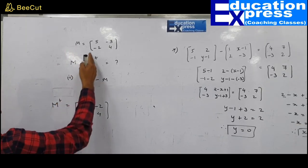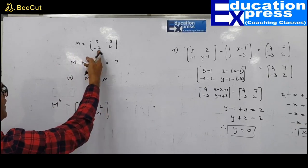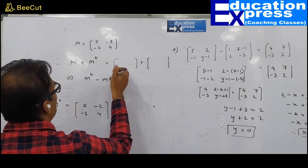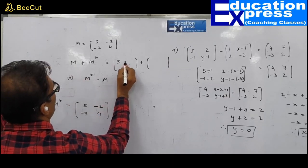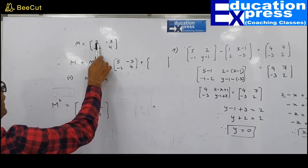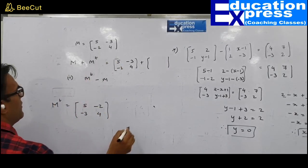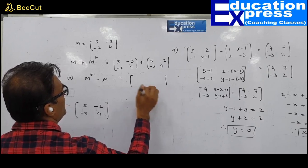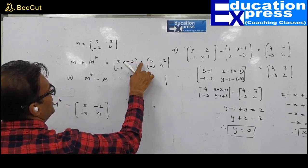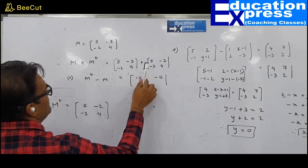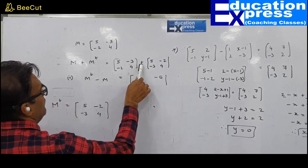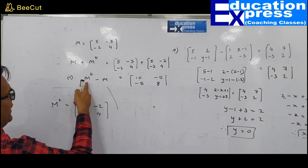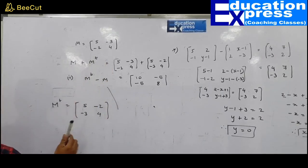Adding N + N^T: [5,−3;−2,4] + [5,−2;−3,4]. Element by element: 5+5=10, −3+(−2)=−5, −2+(−3)=−5, 4+4=8. Result is [10,−5;−5,8]. Next, find N^T − N: [5,−2;−3,4] − [5,−3;−2,4]. Write carefully with brackets: 5−5=0, −2−(−3)=1, −3−(−2)=−1, 4−4=0. Result is [0,1;−1,0].